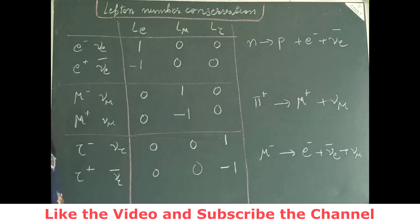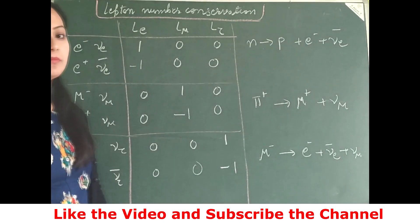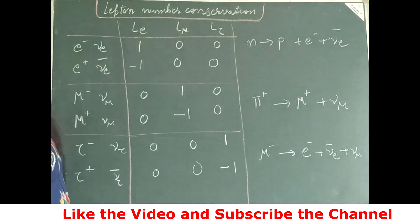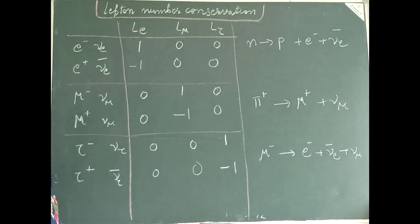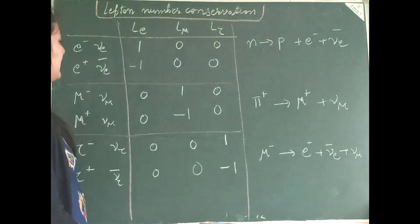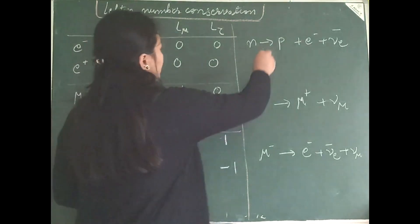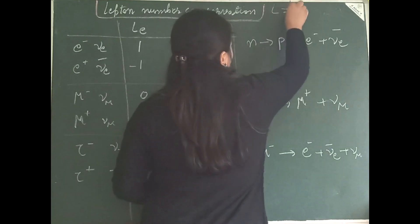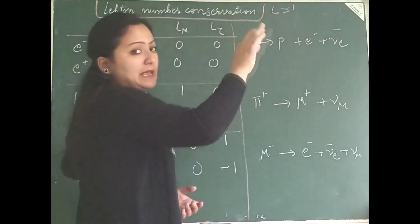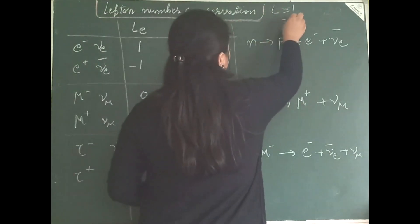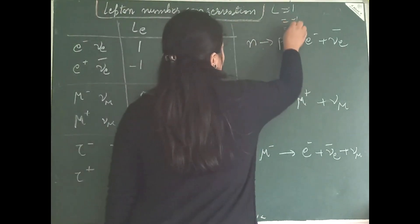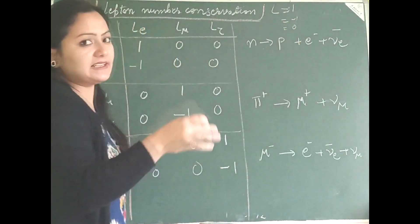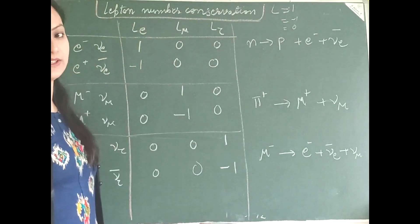We will now be talking about lepton number conservation. For all leptons like electrons, muons and tauons, the lepton number is 1. It is minus 1 for all antileptons, and it is 0 for anything else which is not a lepton.